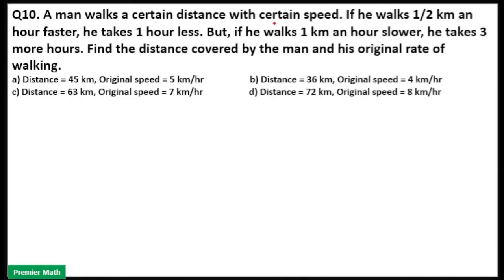A man walks a certain distance with certain speed. If he walks 1/2 km an hour faster, he takes 1 hour less. But if he walks 1 km an hour slower, he takes 3 more hours. Find the distance covered by the man and his original rate of walking.